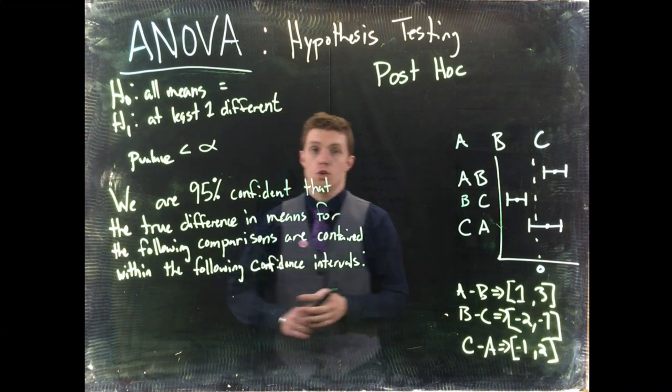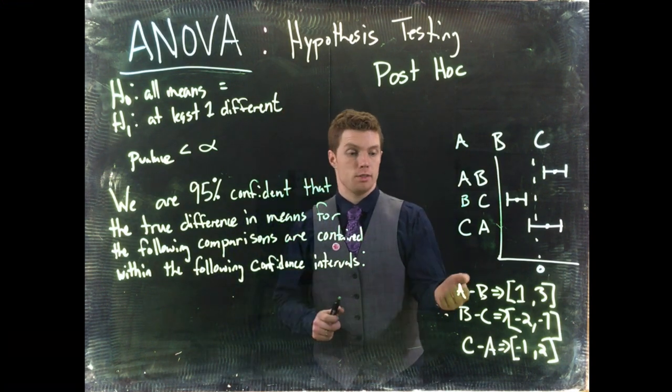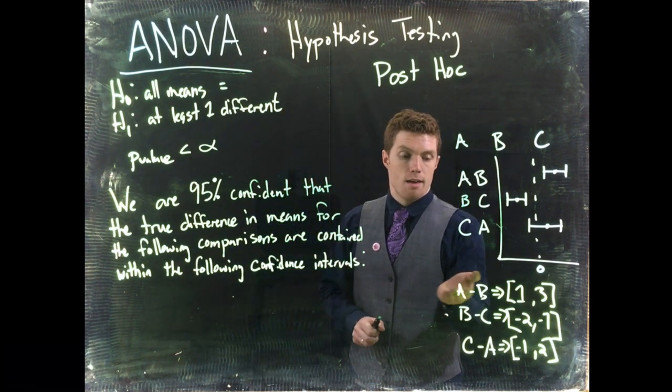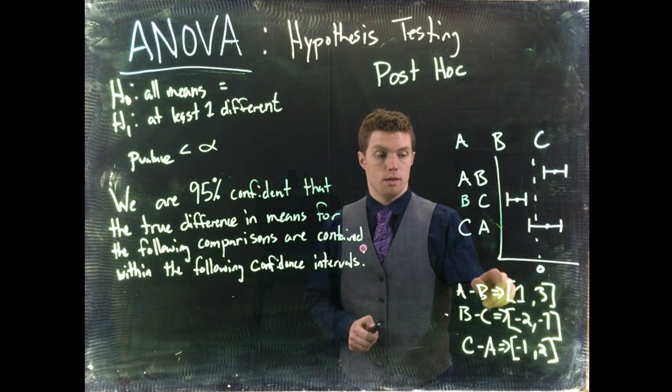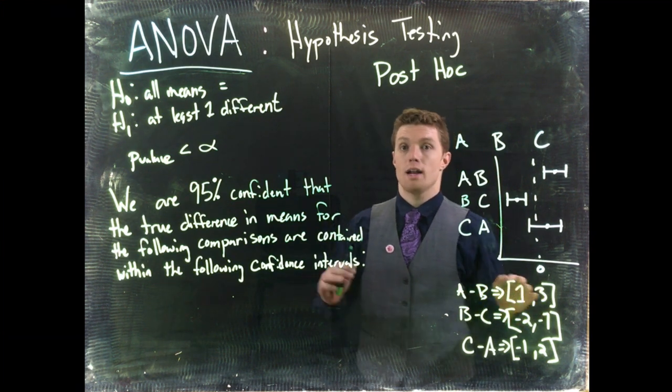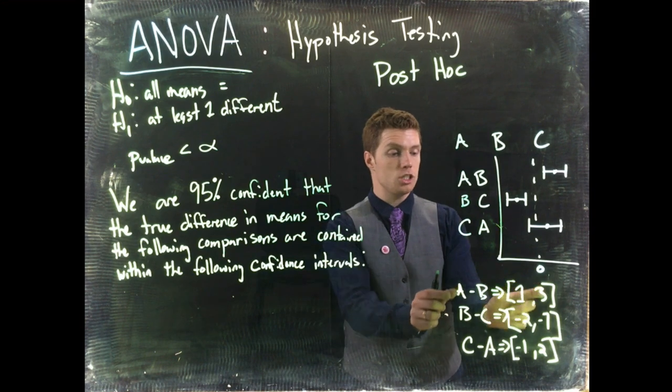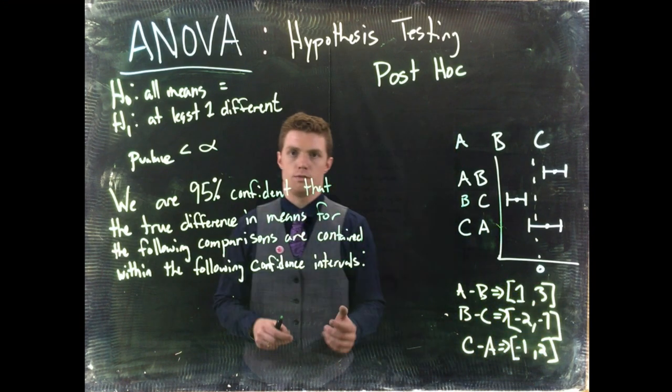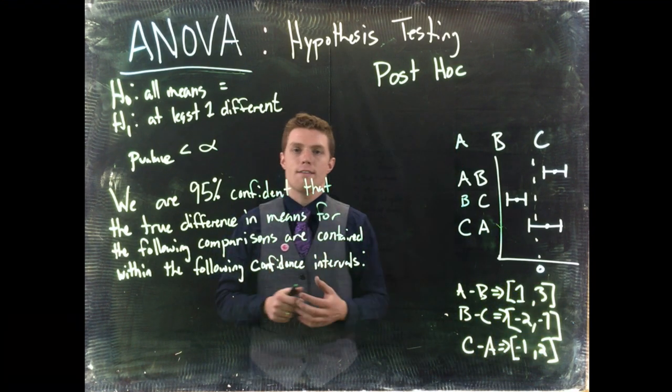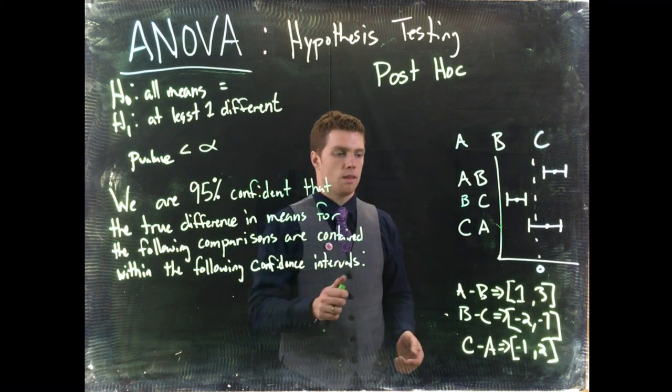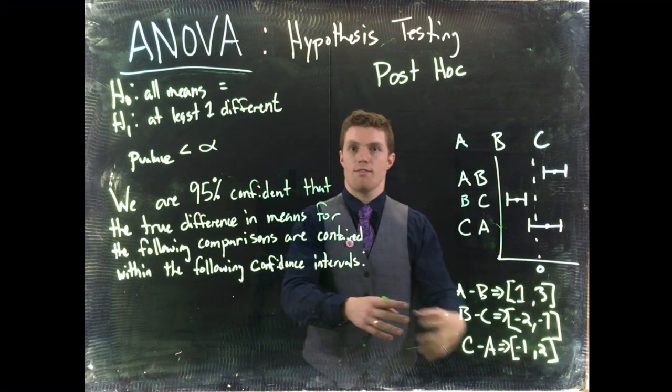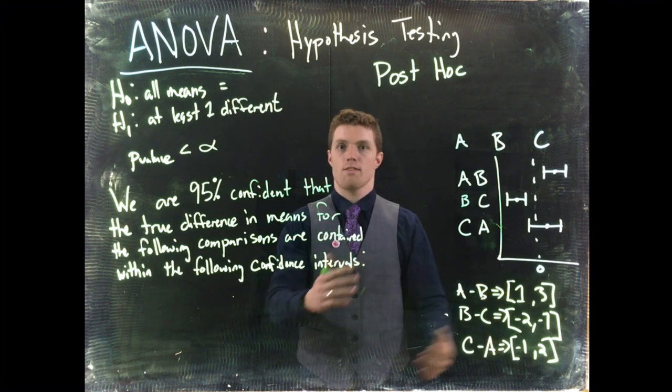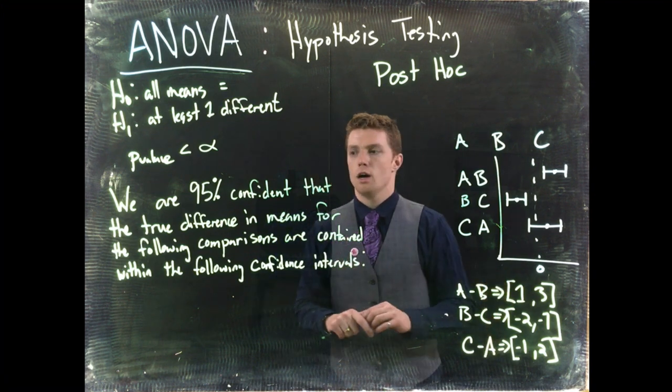Okay so we are no longer 95% confident that A minus B, that the true mean lies within this range. We're 95% confident that each and every one of these intervals together, sometimes they call it a family like pairwise comparison, that all of them, we're 95% confident that all of them have captured their respective true difference in the means.